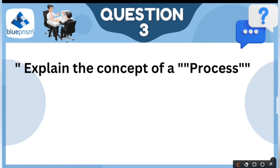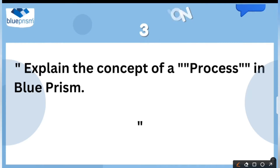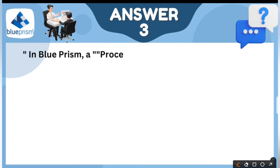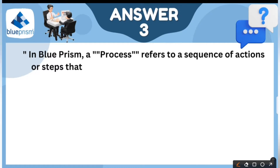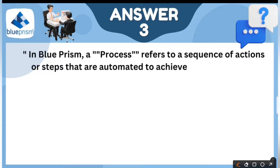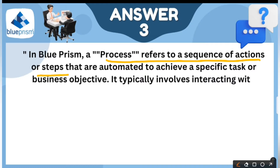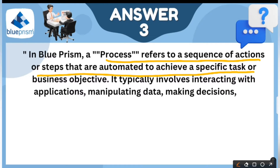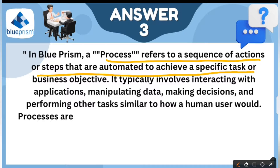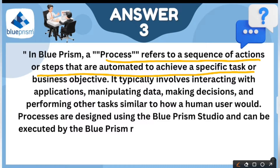Explain the concept of a process in Blue Prism. A Blue Prism process refers to a sequence of actions or steps that are automated to achieve a specific task or business objective. For example, if we want to perform something, we can write those actions or steps.